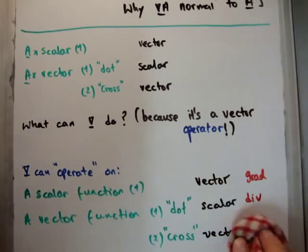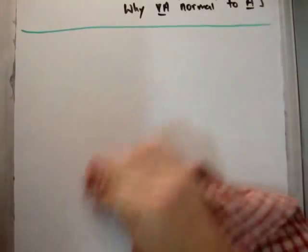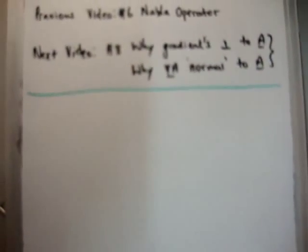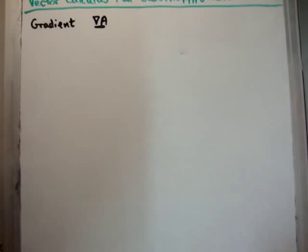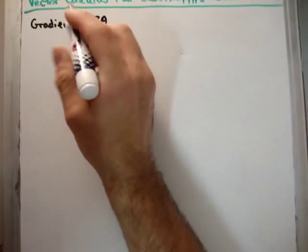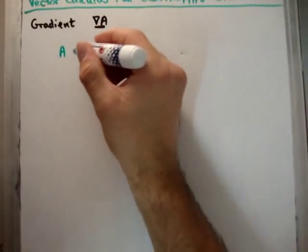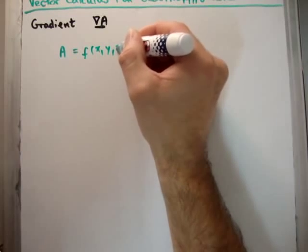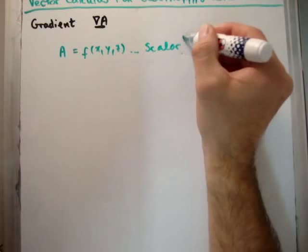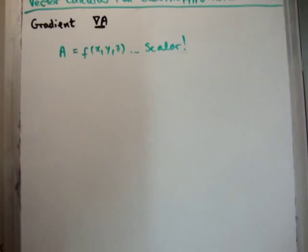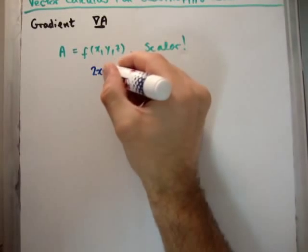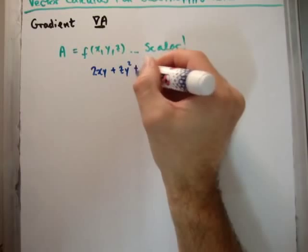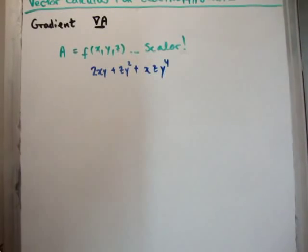So I'm going to show you how to calculate the gradient. It is pretty straightforward. You have to remember that if you have a scalar function — let's say my scalar function is a — it's not vectorized because it's a scalar. It's a function of x, y, and z, but it is a scalar. It could be something like 2xy plus zy² plus xyz⁴, or whatever. The point is that it is a scalar — it has no components.